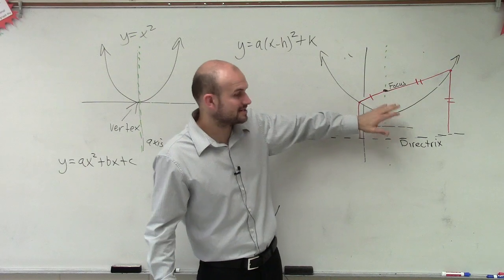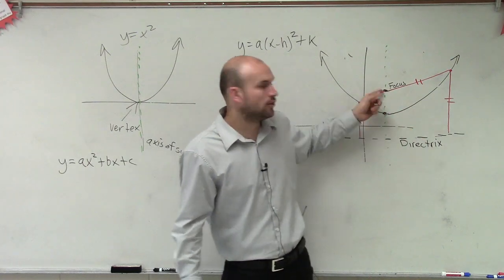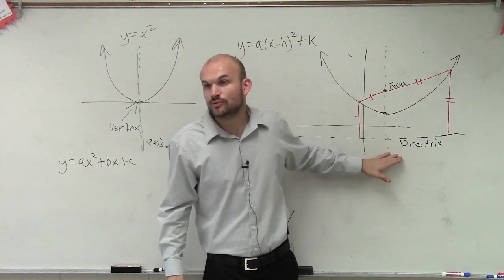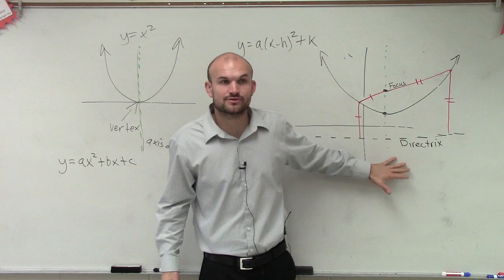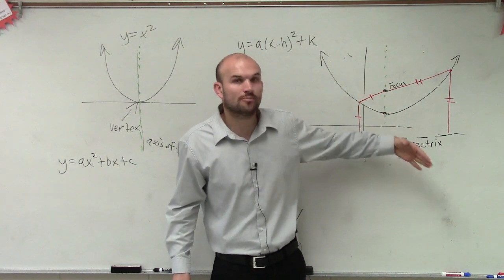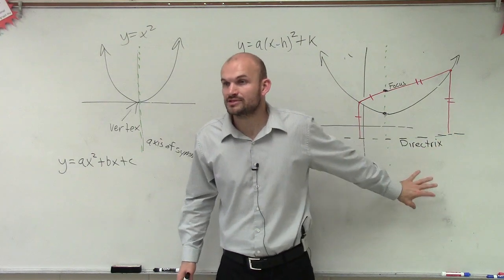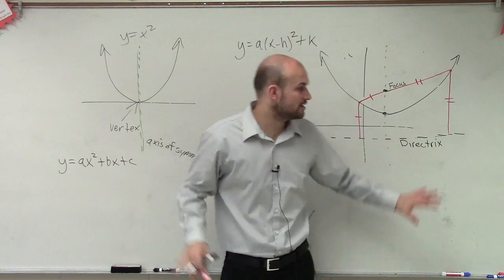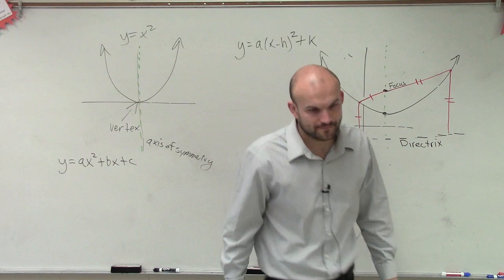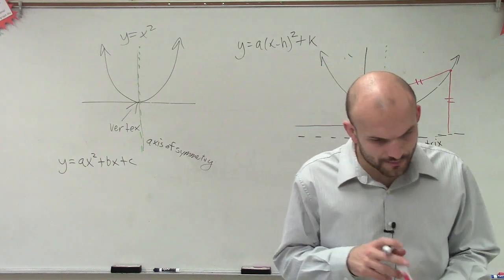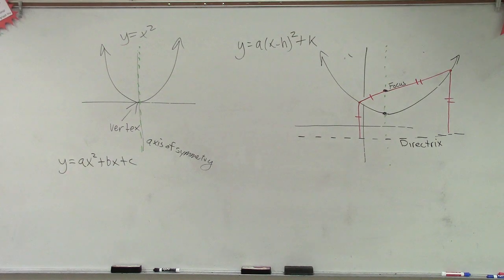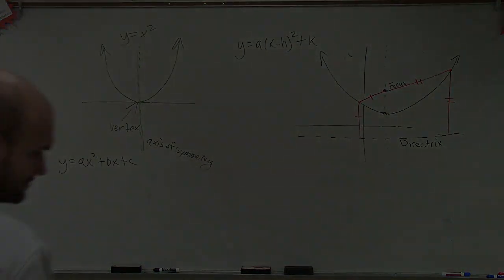a set of points that are equidistant from a given point, which we call the focus, to a line, which we call the directrix. So that is going to be your definition. We're going to use now the focus and the directrix to help us solve and graph parabolas. Rather than just focusing on the vertex and axis symmetry, we're now going to use these pieces of information to help us out. Yes. There also is another line, which